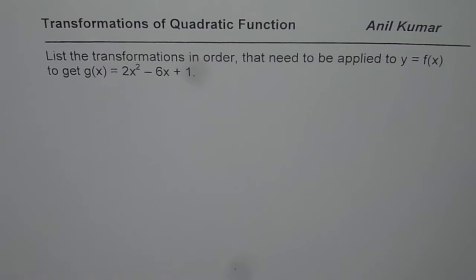I am Anil Kumar and here is a very interesting question about transformations of a quadratic function. The question is: list the transformations in order that need to be applied to y equals f of x to get g of x equals 2x squared minus 6x plus 1.